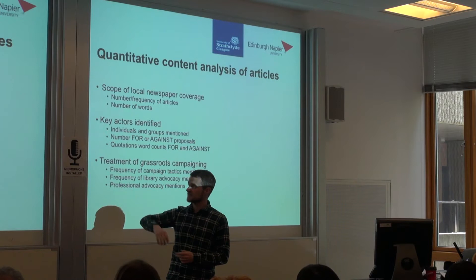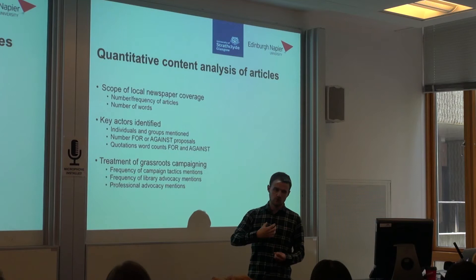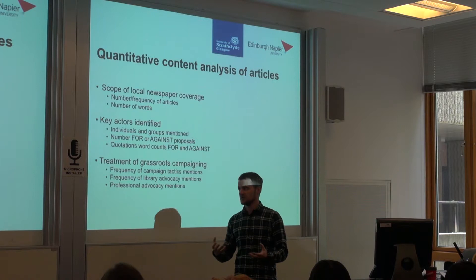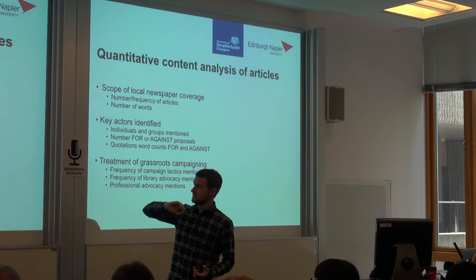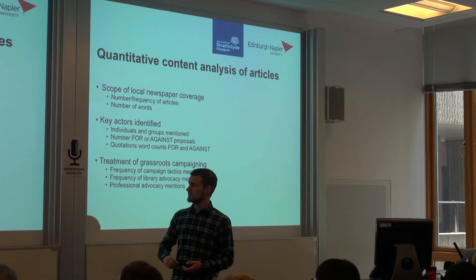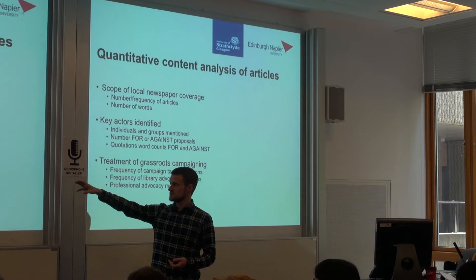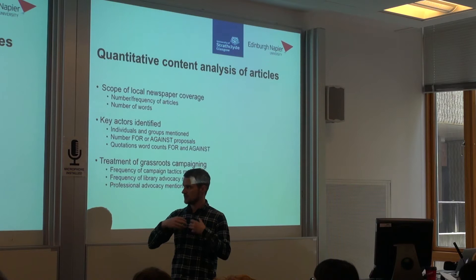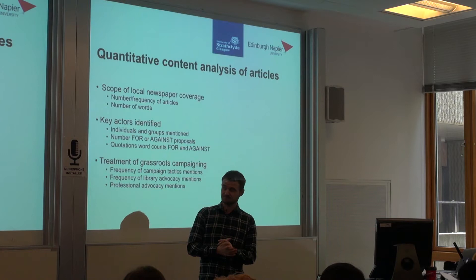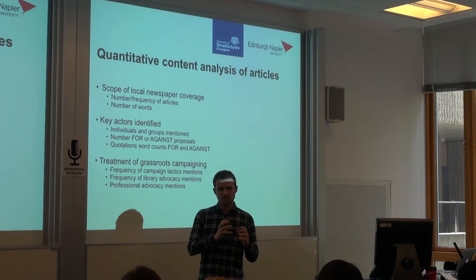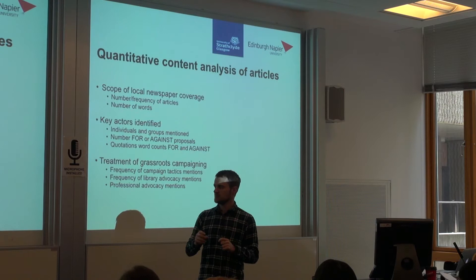To answer the first aim — scope of coverage — I simply counted the number and frequency of articles and the number of words in them. The method was straightforward: I took all the articles from the database, put them into a Word document, and did almost a line-by-line analysis, then set up tables on Excel. For key actors, the second aim, I identified what individuals and groups were mentioned, how often they were mentioned, whether they were for or against the proposals, and the quotation counts attributed to each actor.